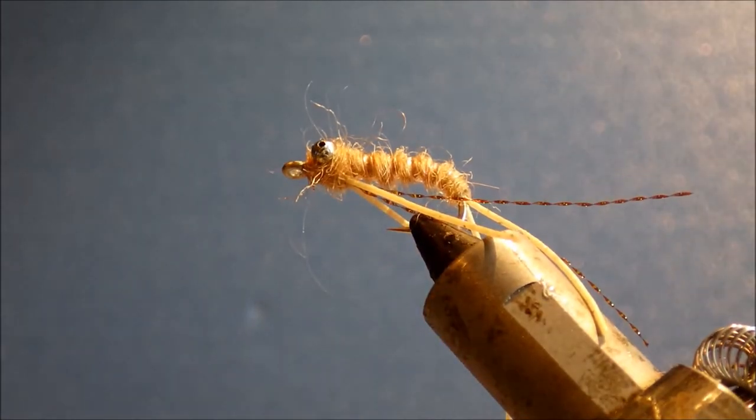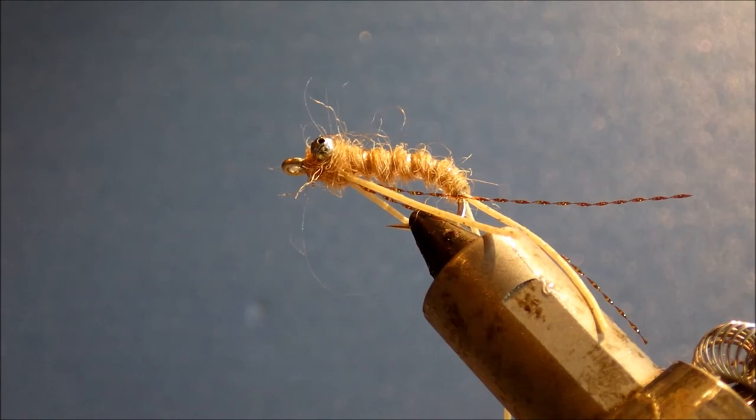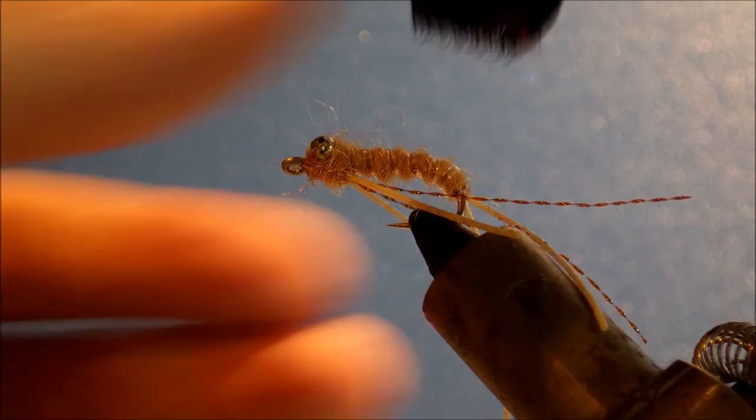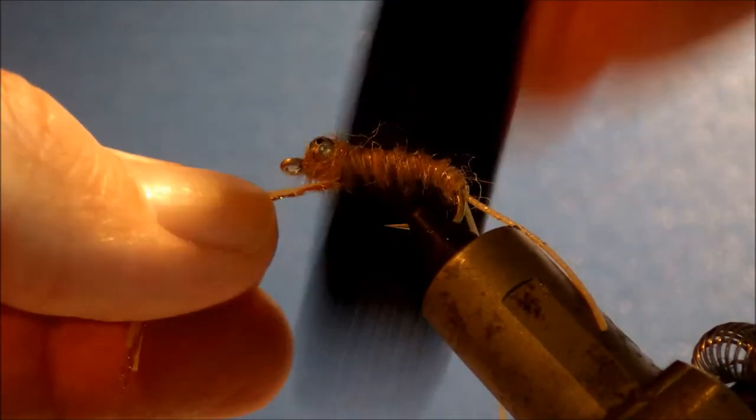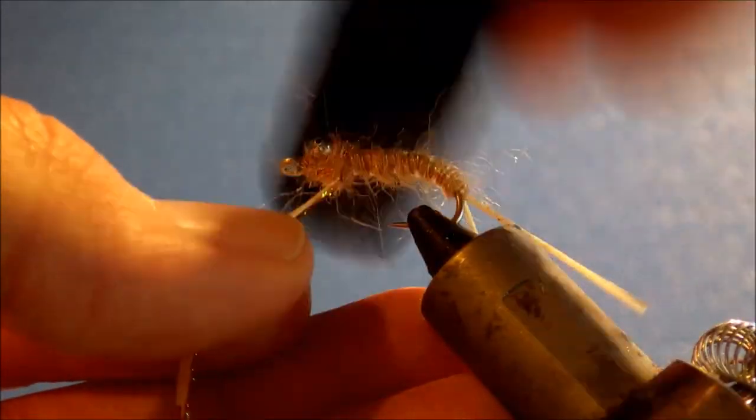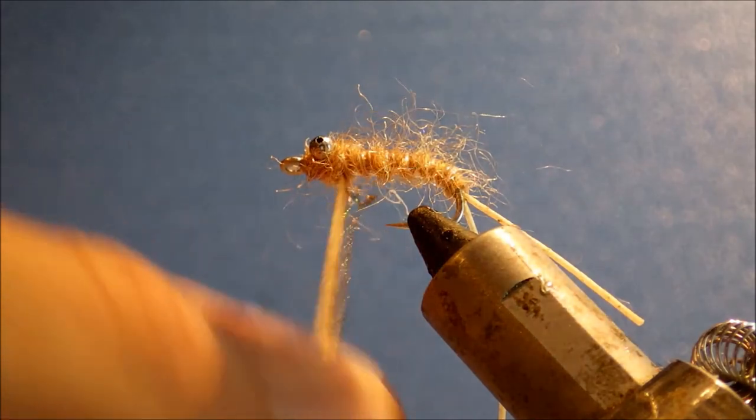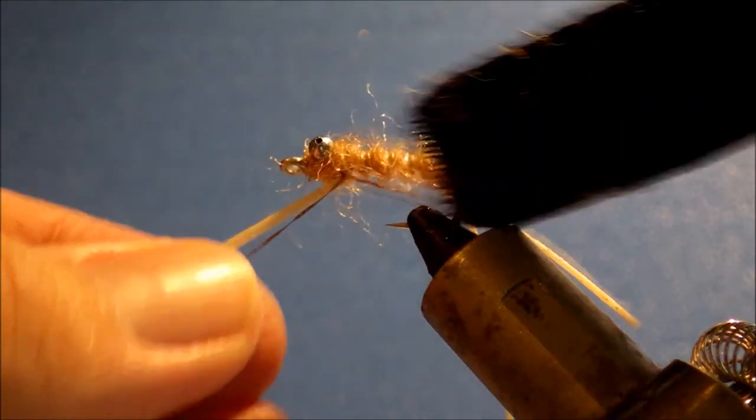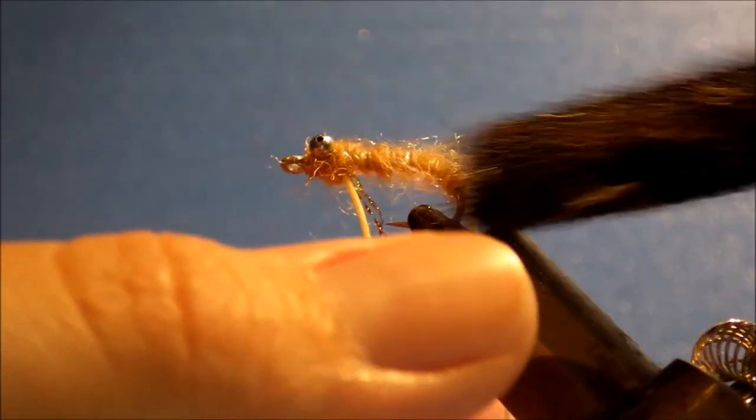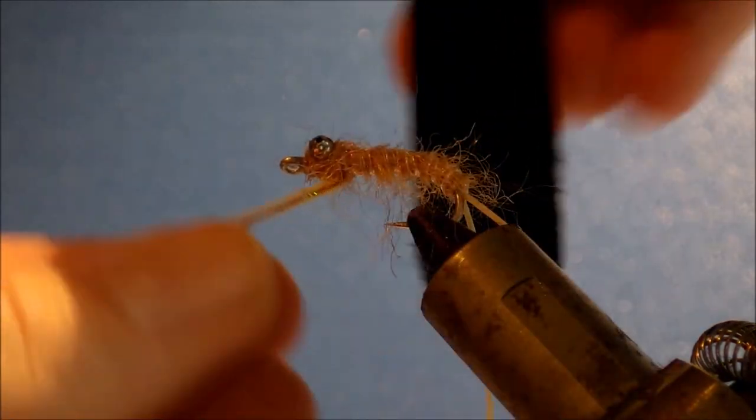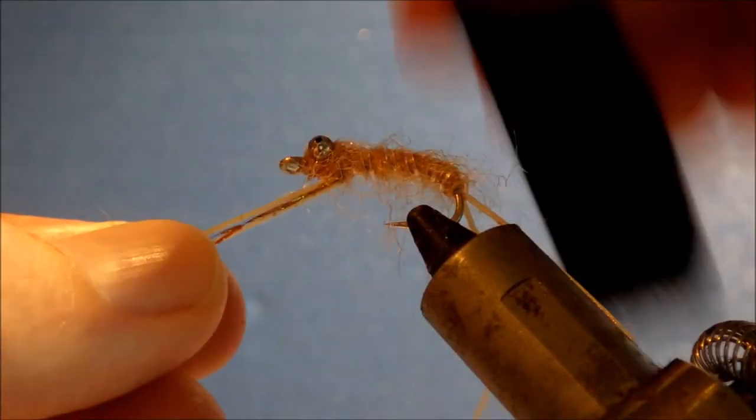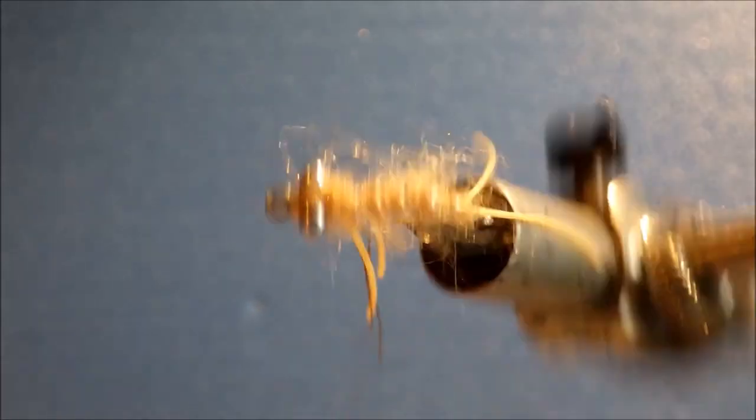And then the last thing is to get in about it with some velcro or your dubbing brush. Just watch the crystal flash and just try to encourage the fibres to come out and sort of sweep backwards, especially up in towards the hook bent, hook gape, just to make it look a bit more buggy.